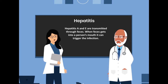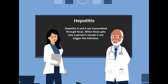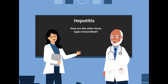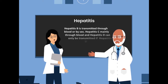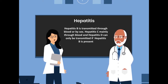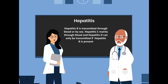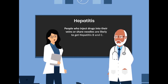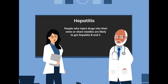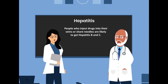When feces gets into a person's mouth, it can trigger the infection. How are the other three types transmitted? Hepatitis B is transmitted through blood or by sex. Hepatitis C mainly through blood, and Hepatitis D can only be transmitted if Hepatitis B is present. People who inject drugs into their veins or share needles are likely to get Hepatitis B and C.